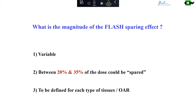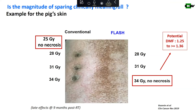The other issue for clinical translation is the magnitude of the flash sparing effect on normal tissues. What we know is that it's probably variable — generally between 20 and 35% of the dose appears to be spared — and it may be different for each type of tissue and organ at risk. The magnitude we may see is a 1.2 to 1.3 dose modifying factor.